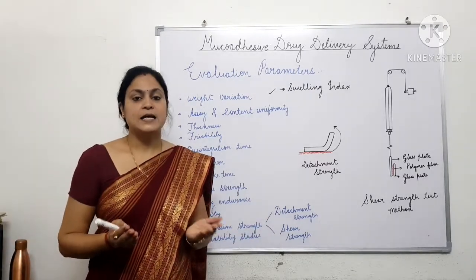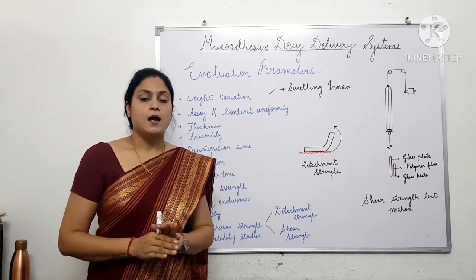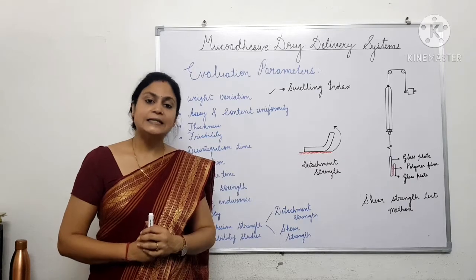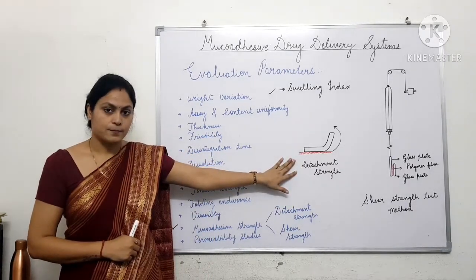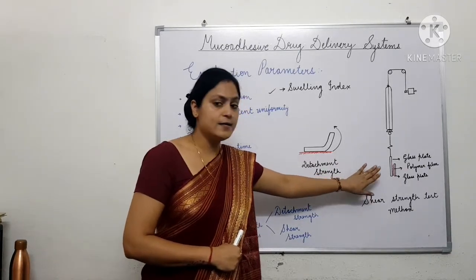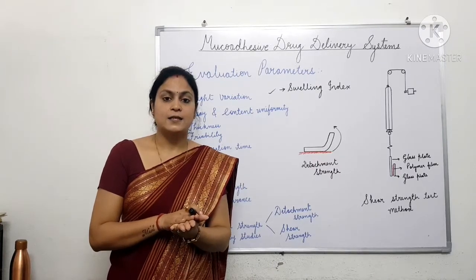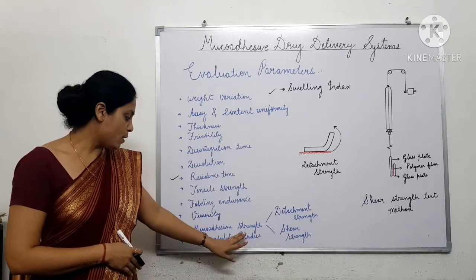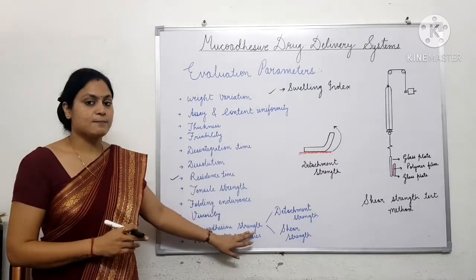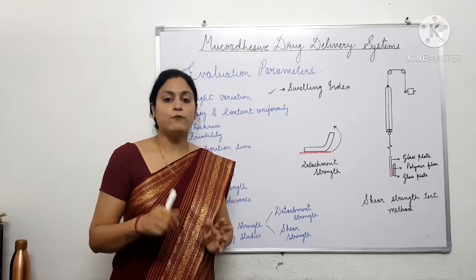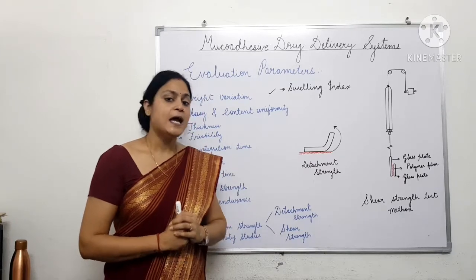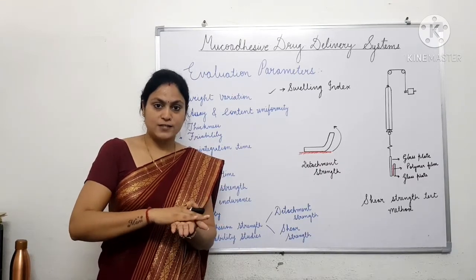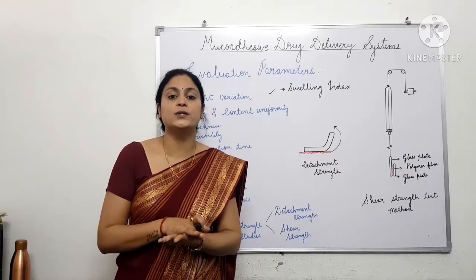When a muco-adhesive device is adhered onto the mucus membrane, the strength required to detach that device from the mucus membrane is called detachment strength. The force which is required to move that device from the mucus membrane in a horizontal way is called shear strength. So muco-adhesive strength is determined by two ways: force required for detaching the device from the mucus membrane, and force required to simply move that device horizontally from one place on the mucus membrane to another.